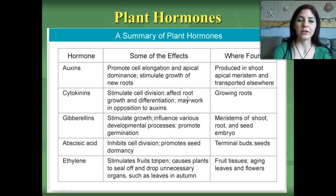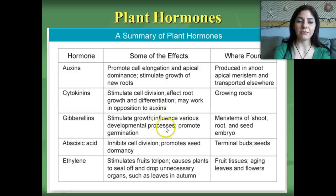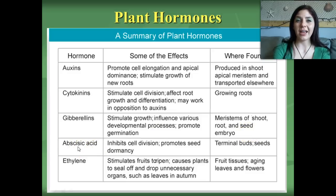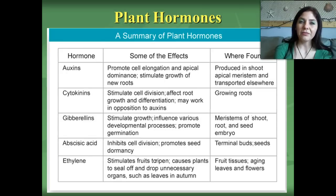Cytokinins stimulate cell division, affect root growth and differentiation, and can work in opposition to auxins. They occur in growing roots. Gibberellins stimulate growth, influence various developmental processes, and promote germination; they're found in meristems of the shoot, root, and seed embryo. Abscisic acid inhibits growth and promotes seed dormancy — when a plant needs to conserve resources until more water or nutrients are available it goes dormant, similar to how bears hibernate. Abscisic acid is found in terminal buds and seeds.